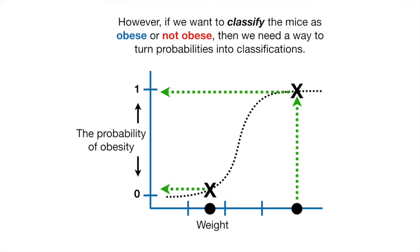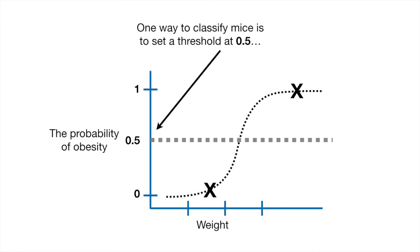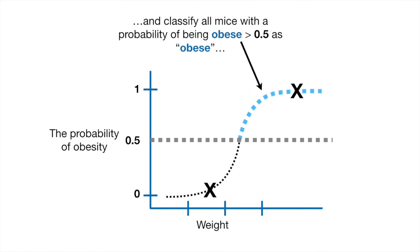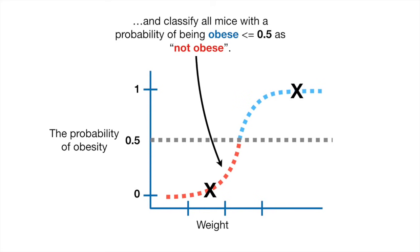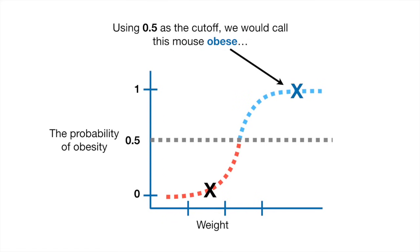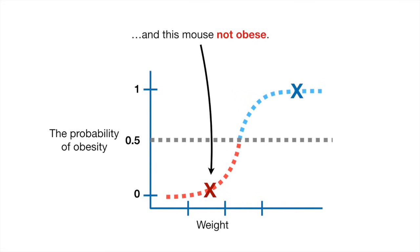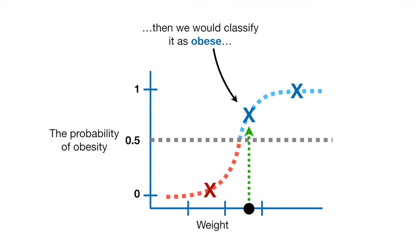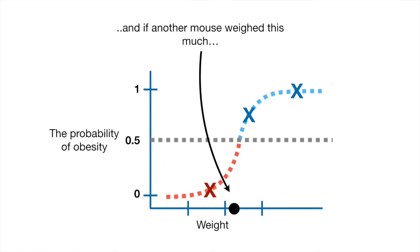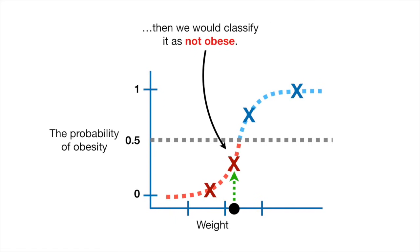However, if we want to classify the mice as obese or not obese, we need a way to turn probabilities into classifications. One way is to set a threshold at 0.5 and classify all mice with a probability greater than 0.5 as obese, and all mice with a probability less than or equal to 0.5 as not obese. Using 0.5 as the cutoff, we would call this mouse obese and this mouse not obese.